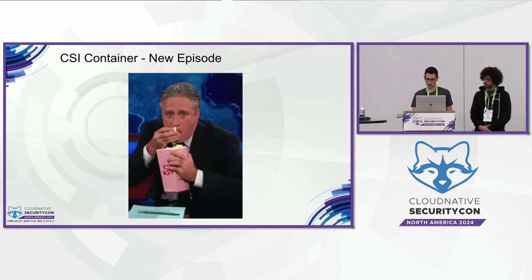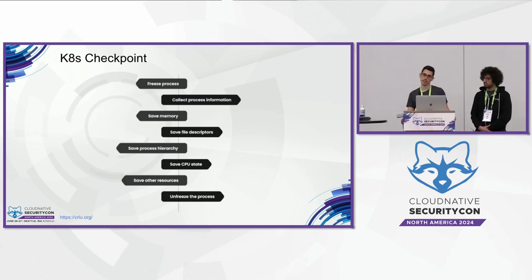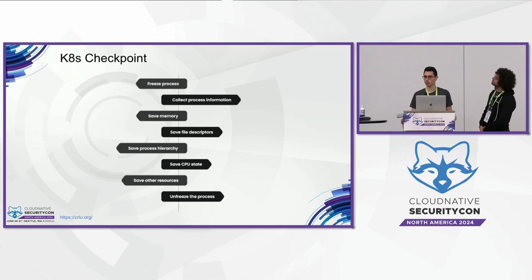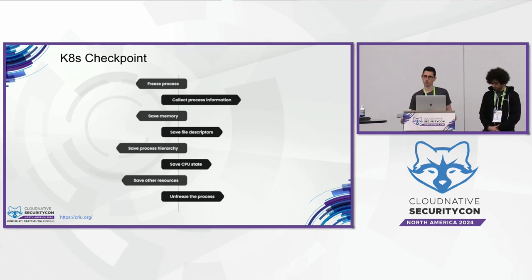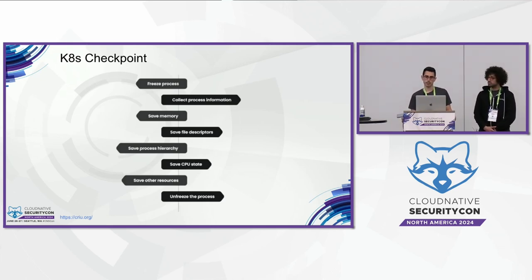Now we are ready for the next episode about Kubernetes CSI. Kubernetes Checkpoint is the main focus for today. It's something we discussed briefly last year, but this year we want to go deeper into what we can do with it. Kubernetes Checkpoint is a feature added in Kubernetes version 1.25 as alpha, and as of 1.30 it is in beta. It is still early stage with some limitations we will highlight, but it is very useful for DFIR.